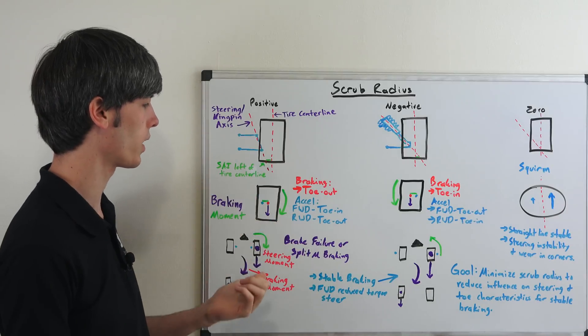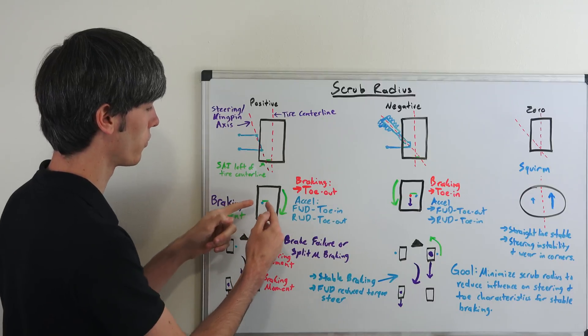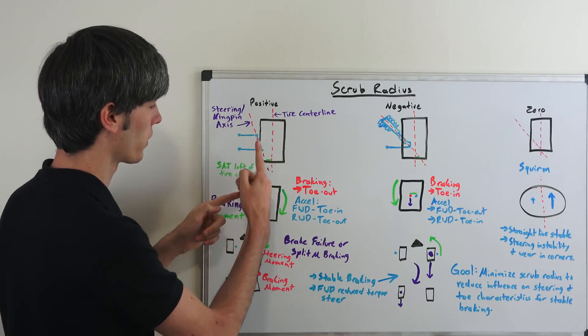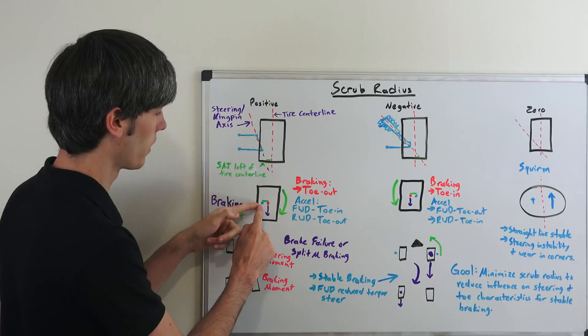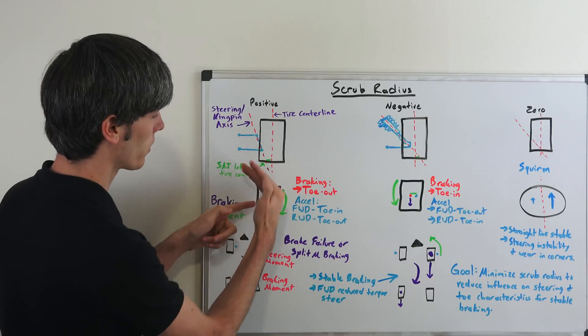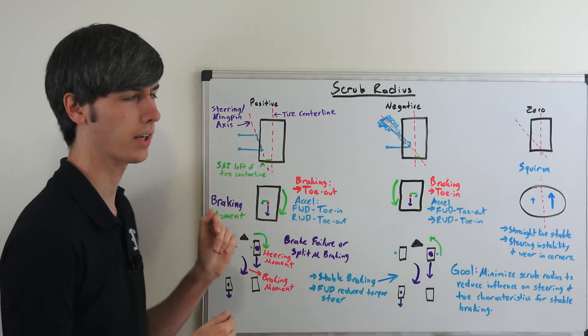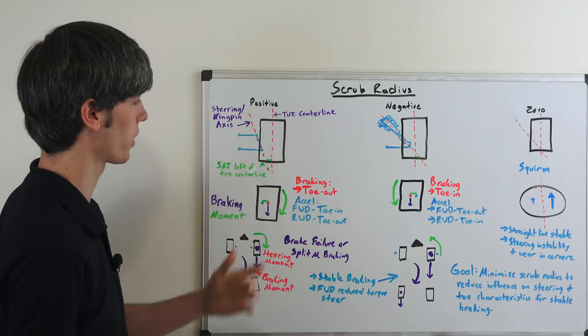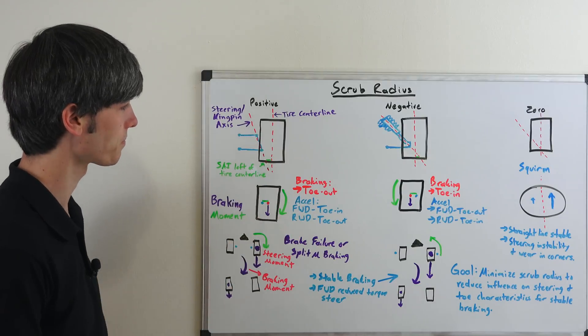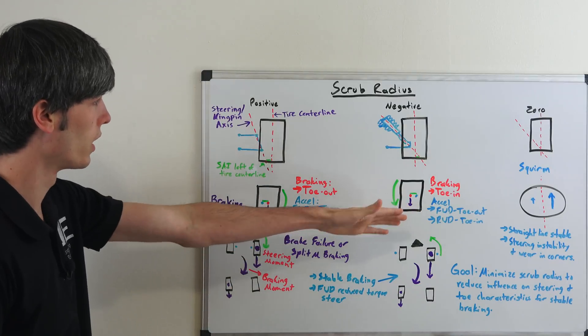Now under acceleration it'll do the opposite if it's front-wheel drive. So as you can see if you have a force that's going to be pushing this tire forward, then this point right here is going to pivot around and so you're going to have tow in. Now if it's rear-wheel drive you're going to be pushing the front tires back just like essentially if you were braking so you're going to have tow out and the opposite is true.